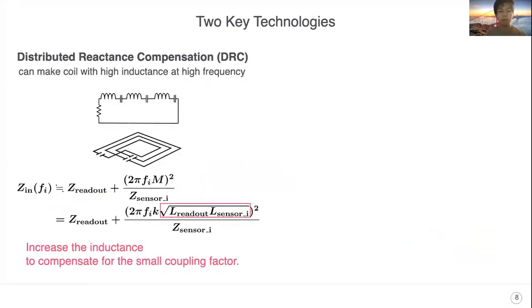To overcome this challenge, we need to increase the inductance for the sensor and the readout coil at high frequency. Basically, it is difficult because of the short wavelength at high frequency. But, distributed reactance compensation technique, simply called DRC, can make a coil with high inductance at high frequency.